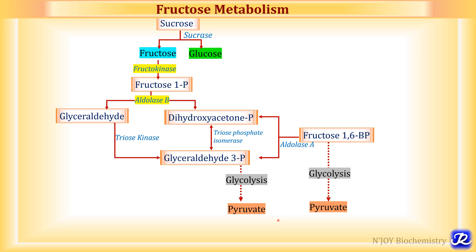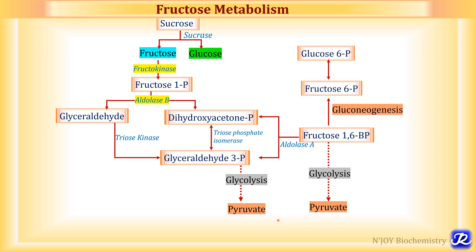If the body is in fasting or starvation, then fructose 1,6-bisphosphate is channeled towards gluconeogenesis — the synthesis of new glucose — with formation of fructose 6-phosphate, glucose 6-phosphate, and finally glucose. This is gluconeogenesis.